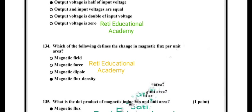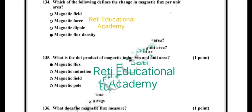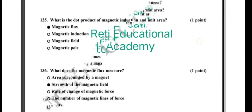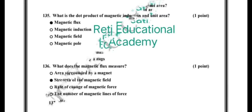Question number 135: What is the dot product of magnetic induction and unit area? The correct option is magnetic flux. Question number 136: What does the magnetic flux measure? The correct answer is it measures strength of the magnetic field.